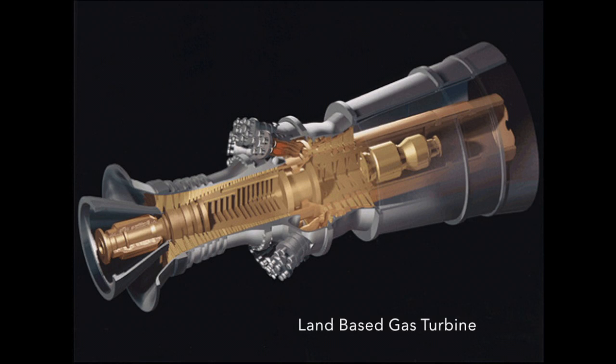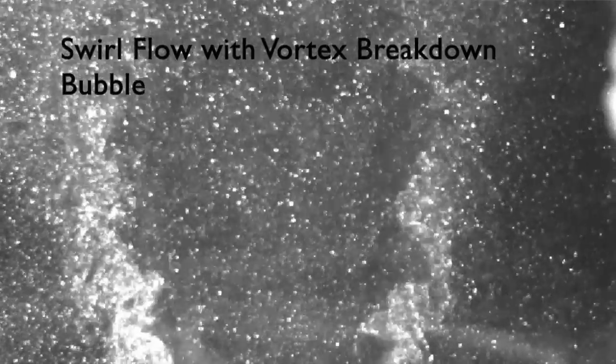Basically any unsteady phenomena in a combustion device we're interested in exploring. My research is applicable to gas turbine engines, and what I'm specifically looking at is what happens when flames run into each other. Most gas turbines have swirling flow fields because the vortex breakdown bubble, which is a result of the swirling motion of the flow, is able to stabilize the flame.